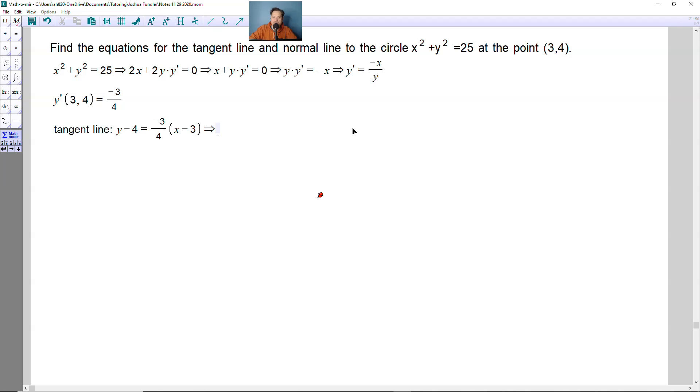This just has to be brought into the form y equals mx plus b. So let's do that. You're going to have y equals, take the negative 4 from the left side, move it to the right side, so it's going to be 4 minus, or rather minus still, negative 3 fourths, and then x minus 3.